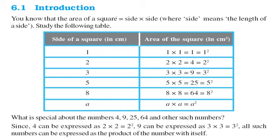So the area of a square is what? It is side into side, or you can say L into L if you take side as length. So side means the length of the side.